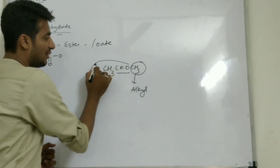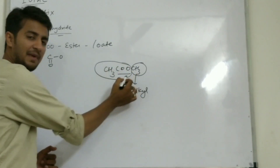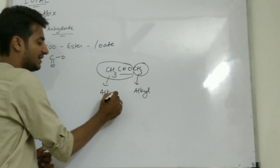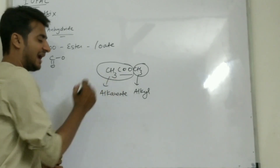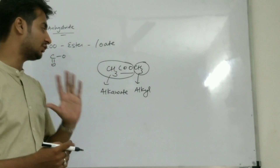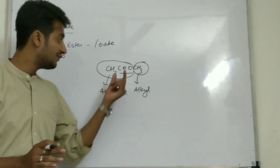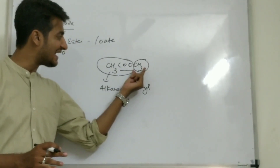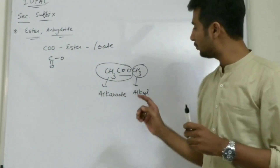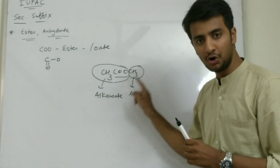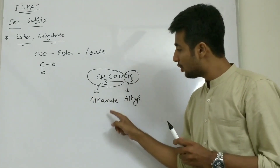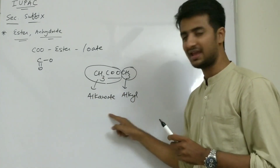The carbons on the right side of C double O are known as the alkyl group. Now you have to include the C double O with the remaining number of carbons — they will act as an alkenoate. Whenever ester is there, whatever carbons are on the right hand side, consider them as an alkyl group, and the rest of the carbons with C double O you write as an alkenoate.